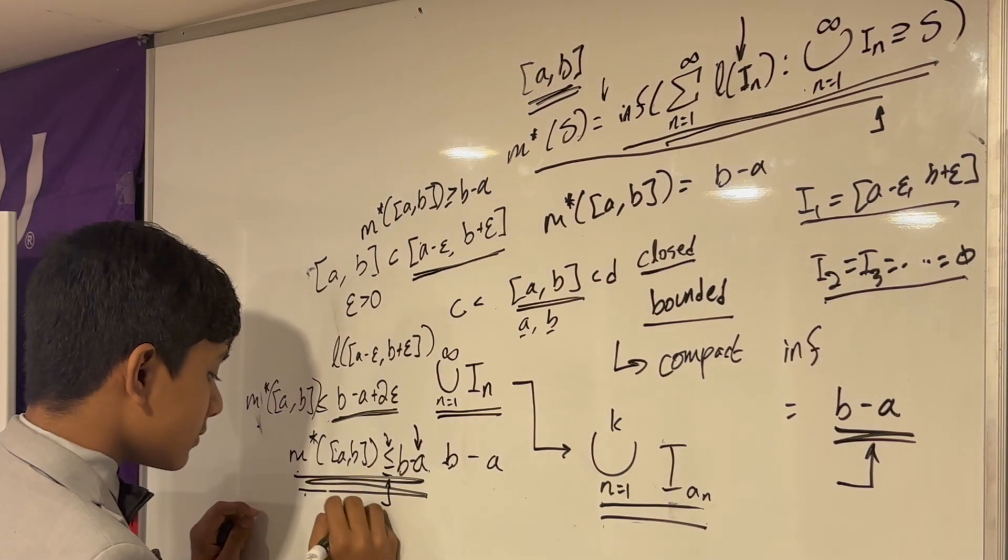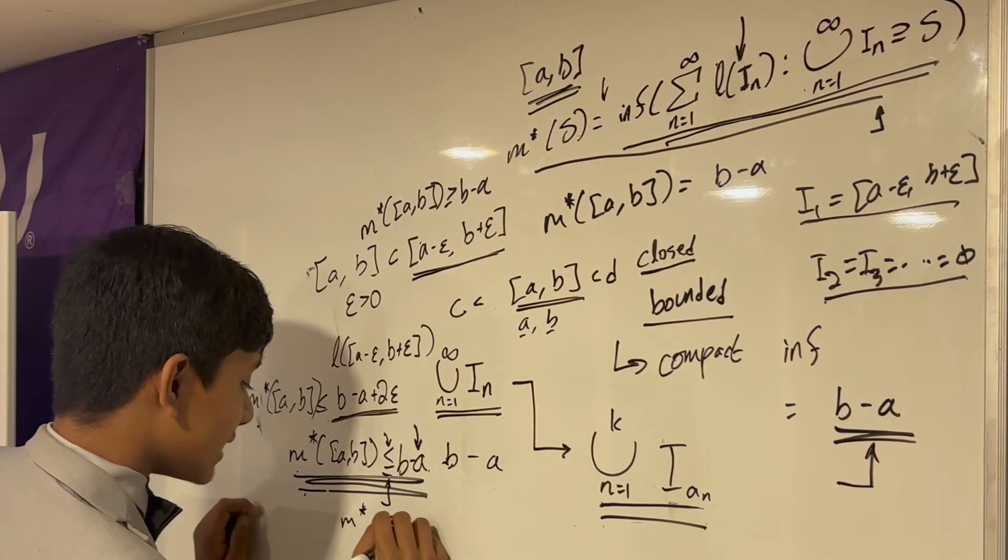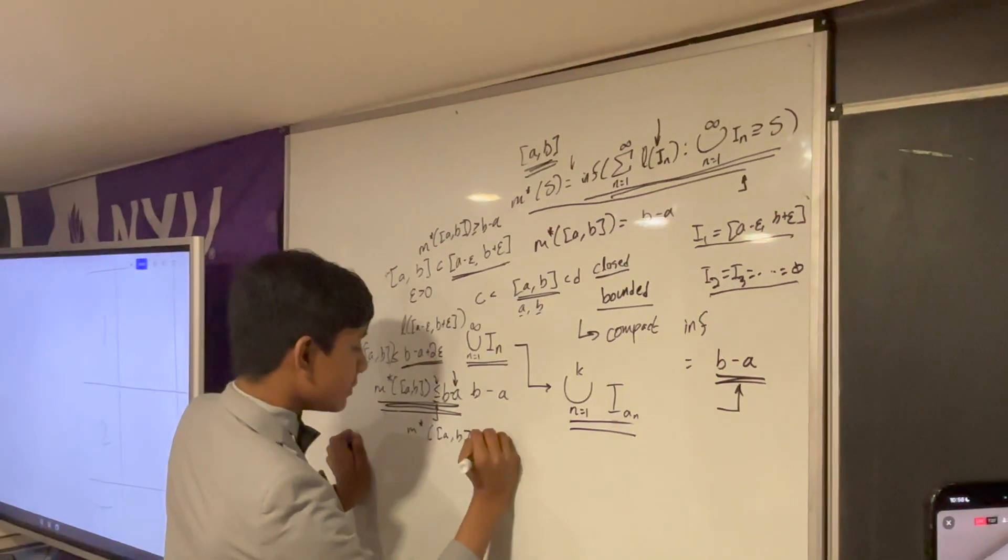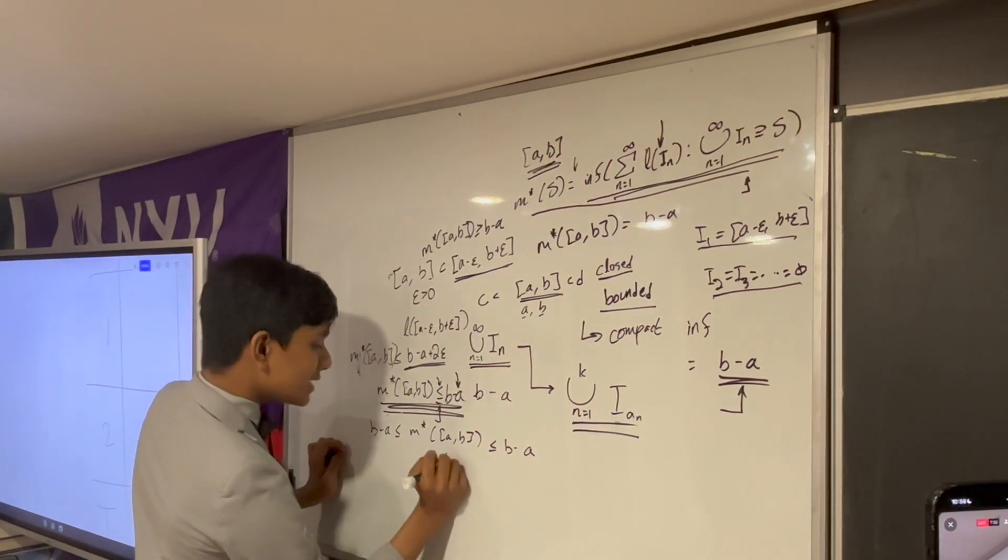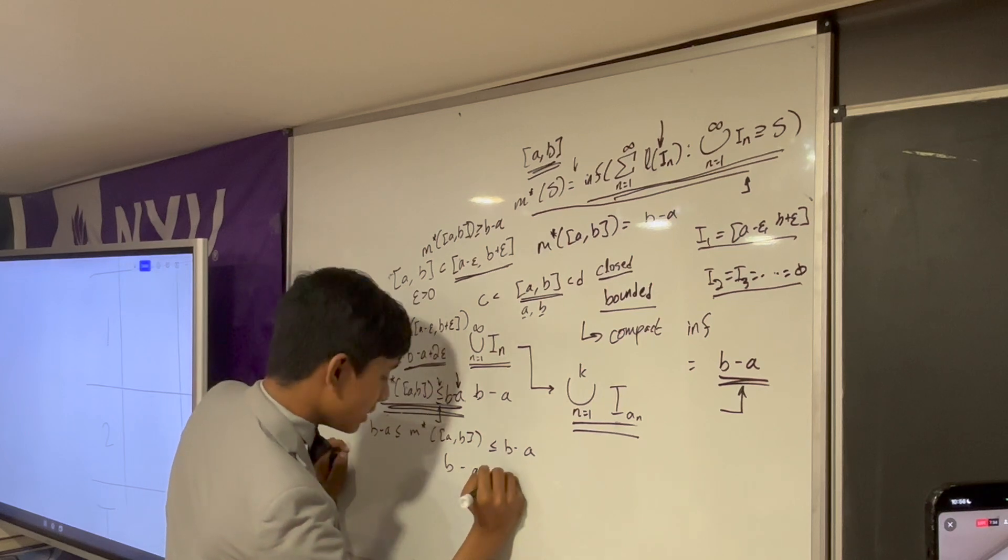Okay, so, the Lebesgue measure is less than or equal to B minus A, but it's also greater than or equal to B minus A, which implies that it has to be equal to B minus A.